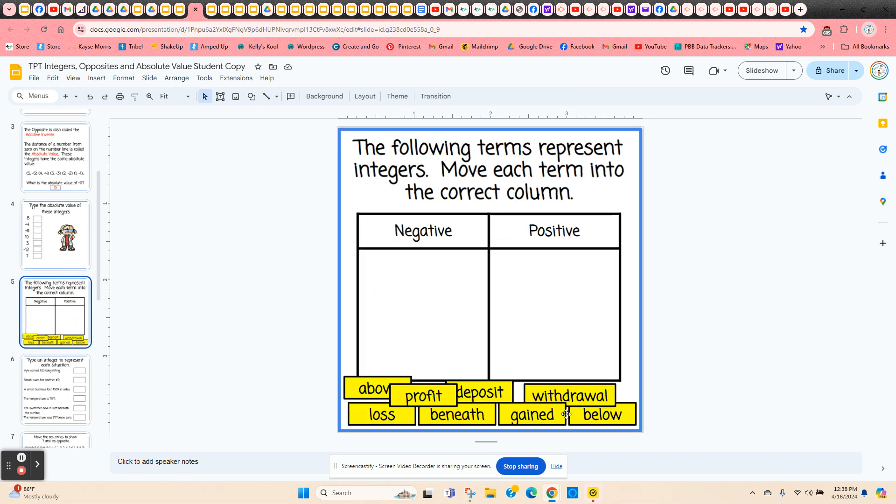The next slide has students looking at words that they're going to see in real life. So they're going to move these into the correct column as to whether they represent positive or negative. So they're going to click and hold on the edge of the word. Withdrawal would be negative, representing negative numbers, deposit positive, and so on.